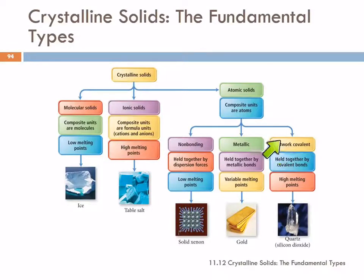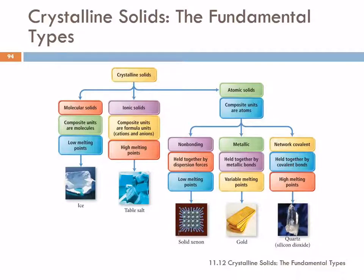Network covalent solids are atoms held together by covalent bonds. These are going to have very high melting points because covalent bonds are also very strong. A diamond is actually a network covalent solid — it's carbon atoms bonded three-dimensionally to other carbon atoms by covalent bonds, and that makes diamonds very strong.